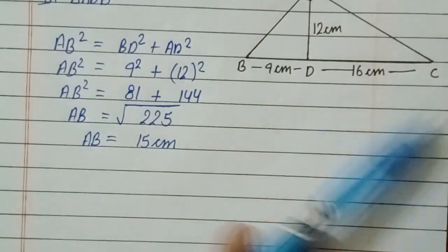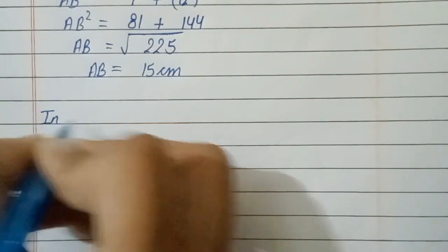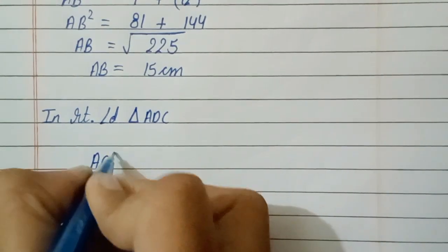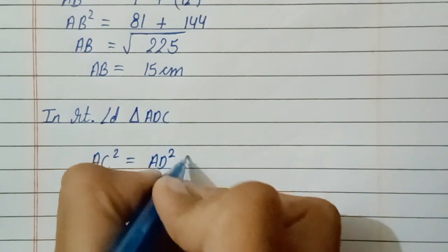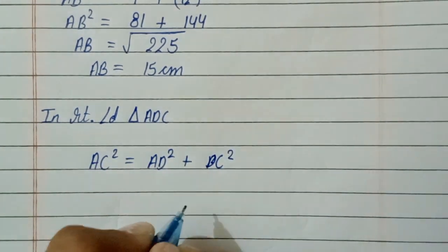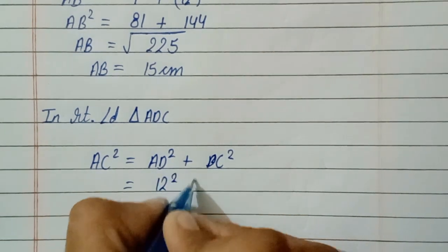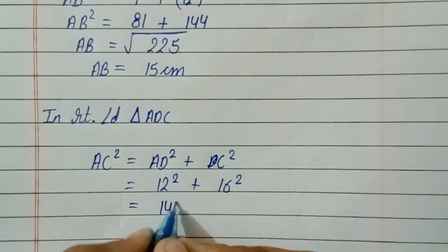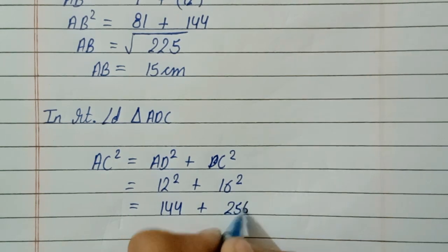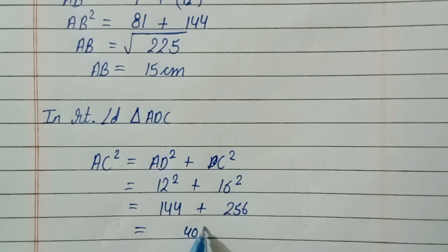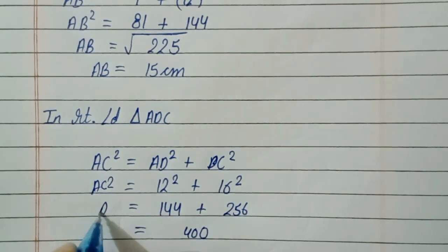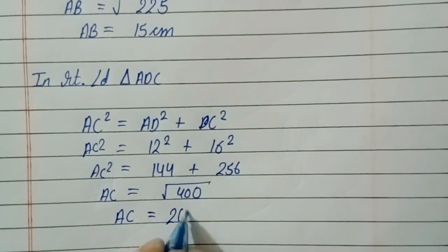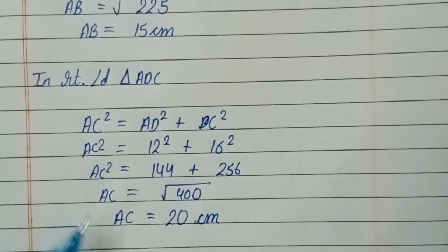Now we have to find AC. In right angled triangle ADC, by Pythagoras theorem: AC square equals AD square plus DC square. AD is 12 cm and DC is 16 cm. So 12 squared is 144 and 16 squared is 256. When we add these we get 400, which means AC equals root of 400, so AC equals 20 centimeters.